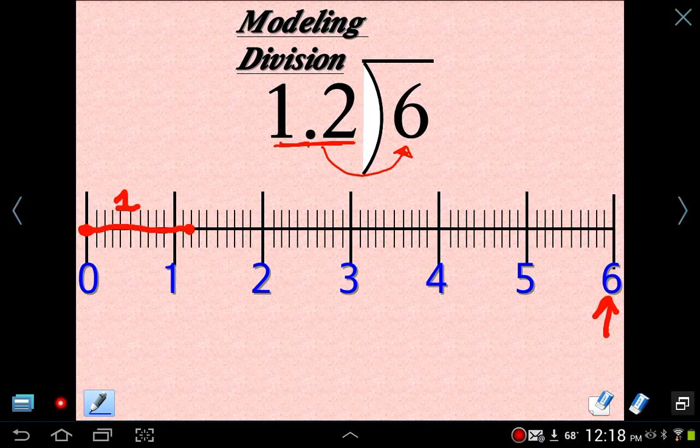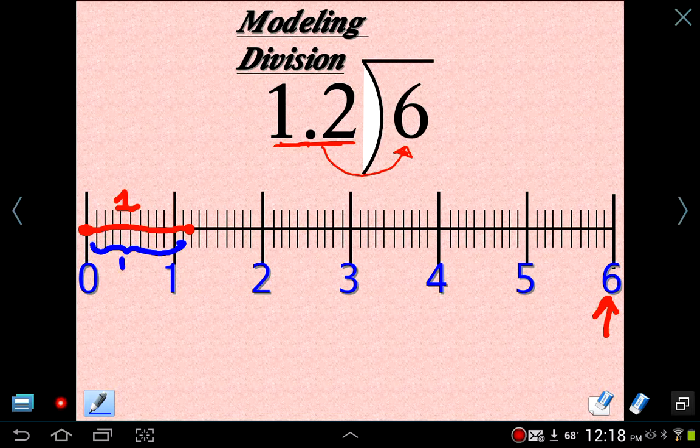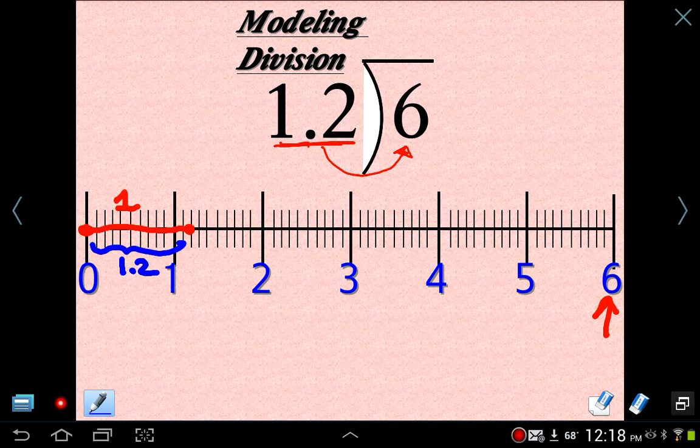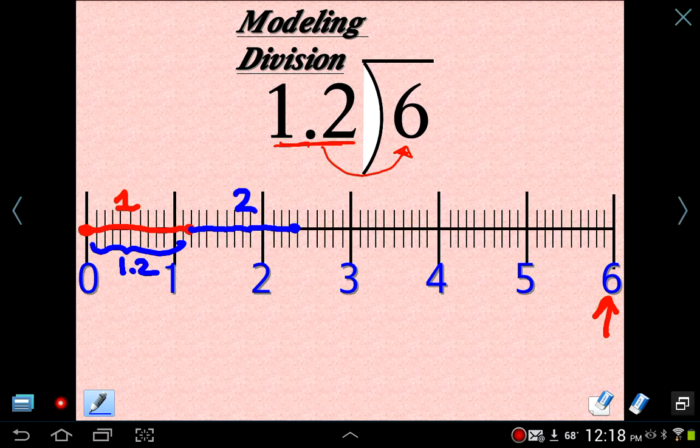Now I've got to be careful here when I count to the next 1.2. Because this was equal to 1.2. So I want to go 1.2 again. But it may be easier if I just think of it as 12 tenths. So 1, 2, 3, 4, 5, 6, 7, 8, 9, 10, 11, 12. So there it is. So there's our second 1.2.